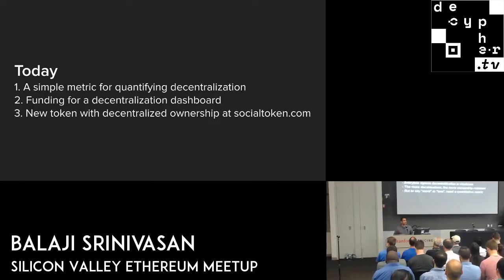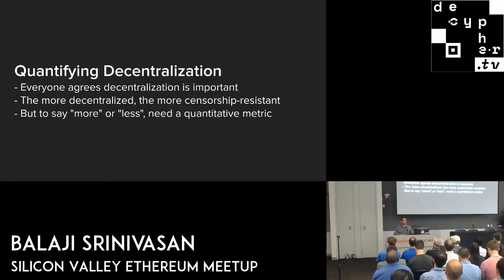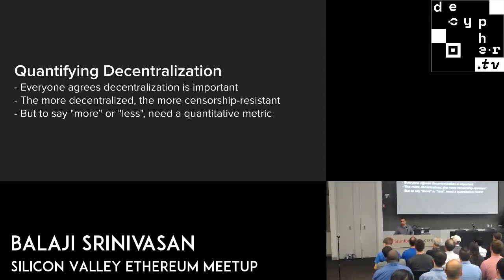When we think about decentralization, this is something that everybody talks about endlessly. Everyone's going to say it's important — in fact, it's the most important property of blockchains as opposed to traditional databases. But in order to say that something is more or less decentralized, you need to have a quantitative metric. So just to establish that: everyone agrees that decentralization is important.